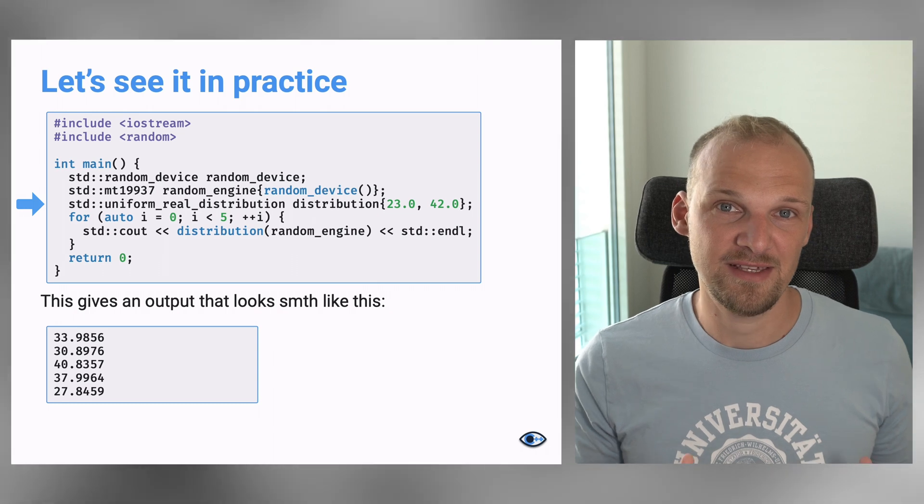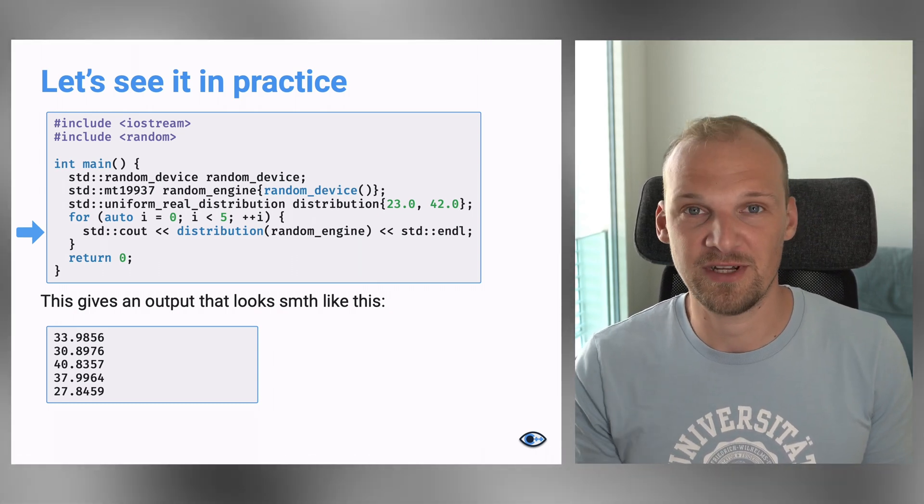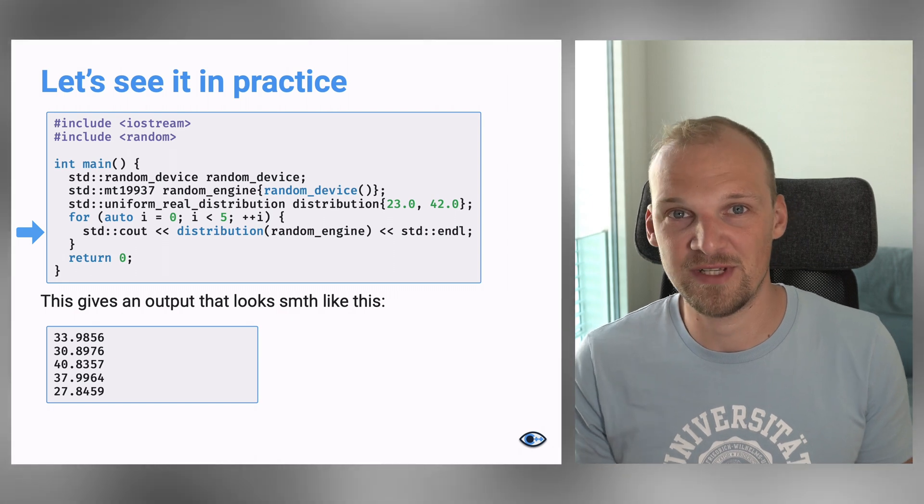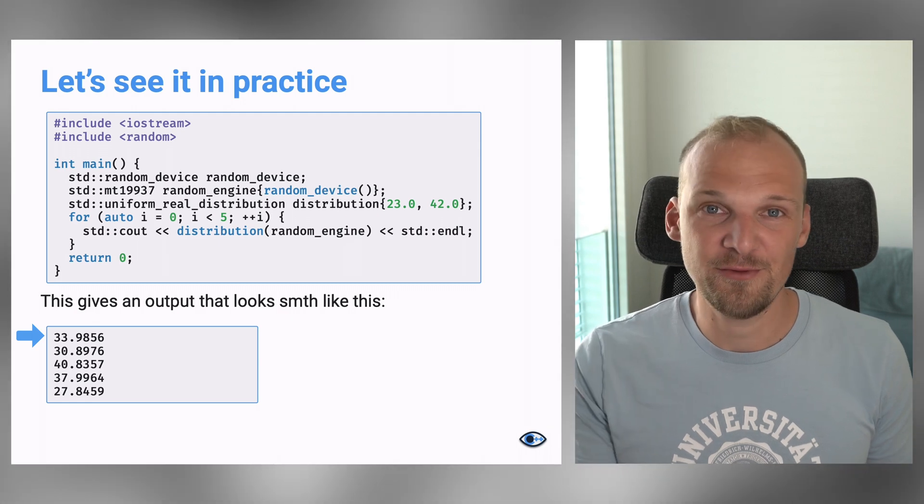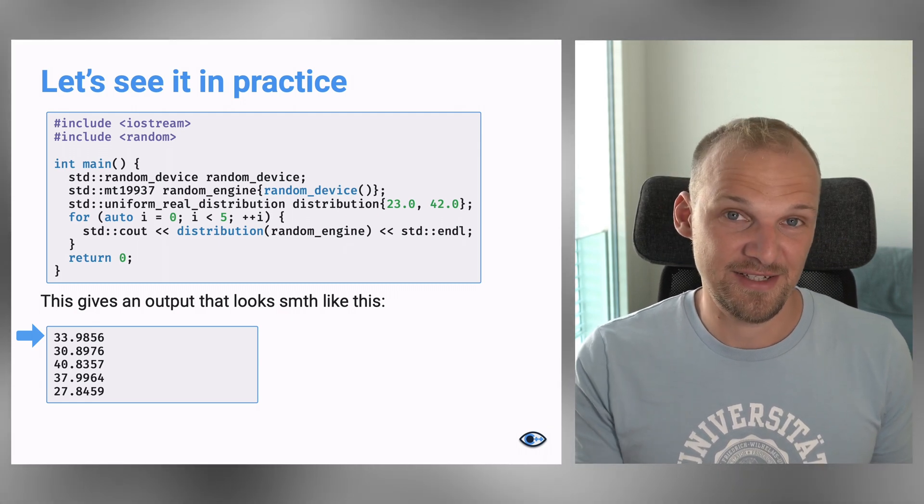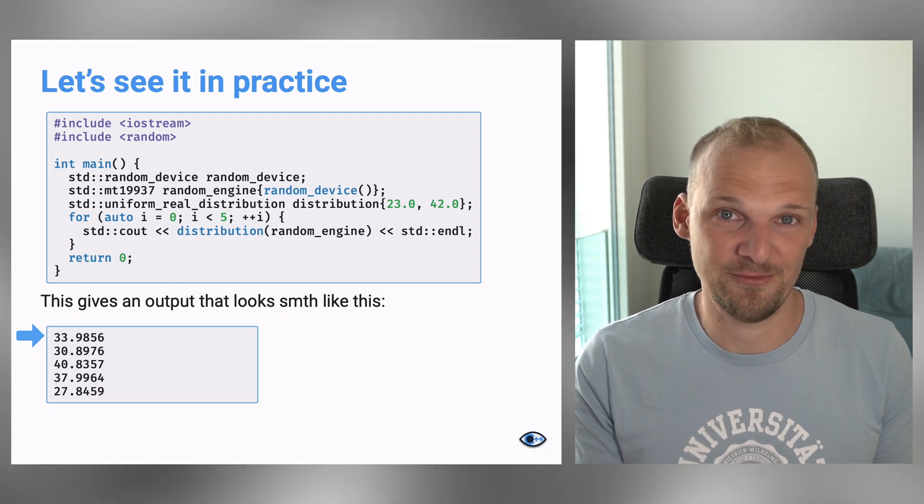Now, if you run this program, the cout will trigger and the numbers will be generated. So, in this particular case, I will generate just five numbers and the output will be something like this. And of course, these are random numbers. So, if you run this program, you will get a different set of values. And I definitely urge you to actually run this program.